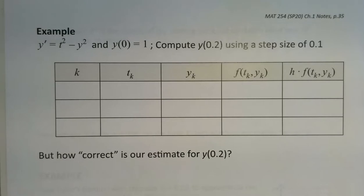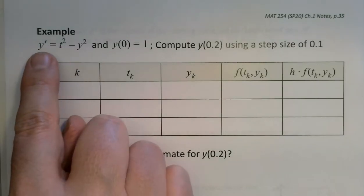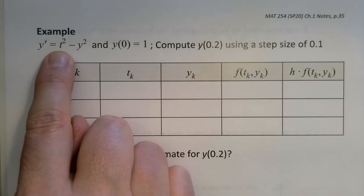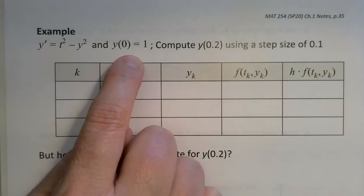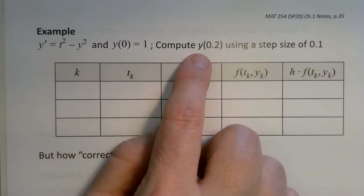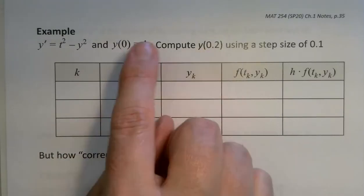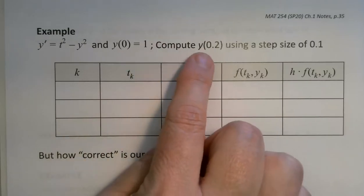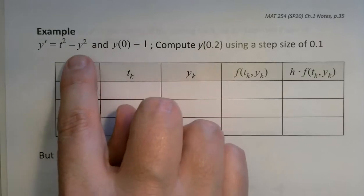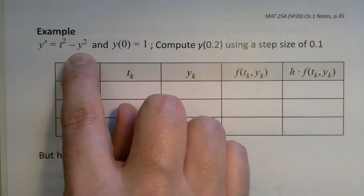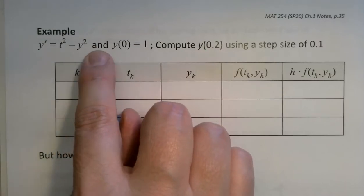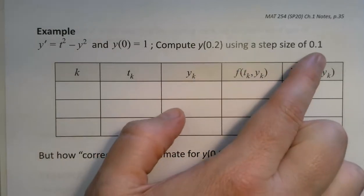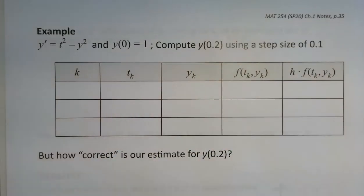The example we want to make sense of is a differential equation in terms of y and t, with independent variable t. We have an initial condition and it asks us to compute y of 0.2. We know y of 0 is 1, but what about y of 0.2? This is not separable, so we'd have to have Maple calculate it. We're going to do this with a step size of 0.1 using Euler's method.